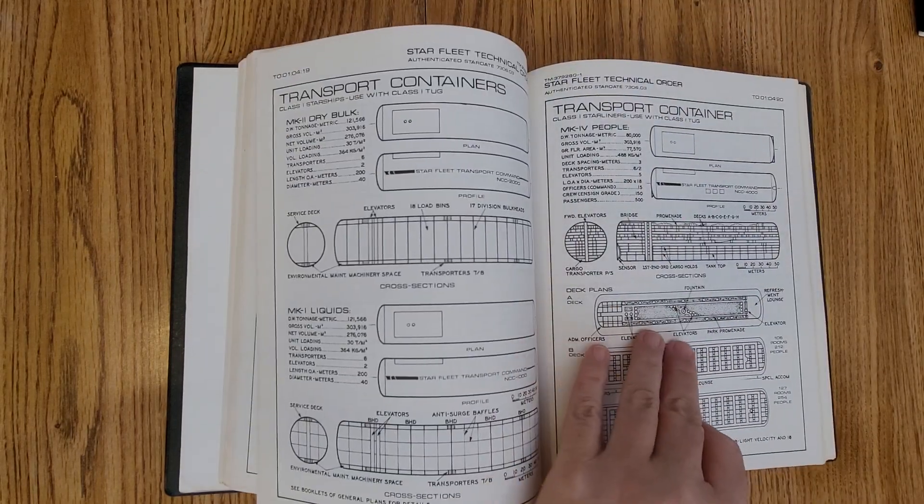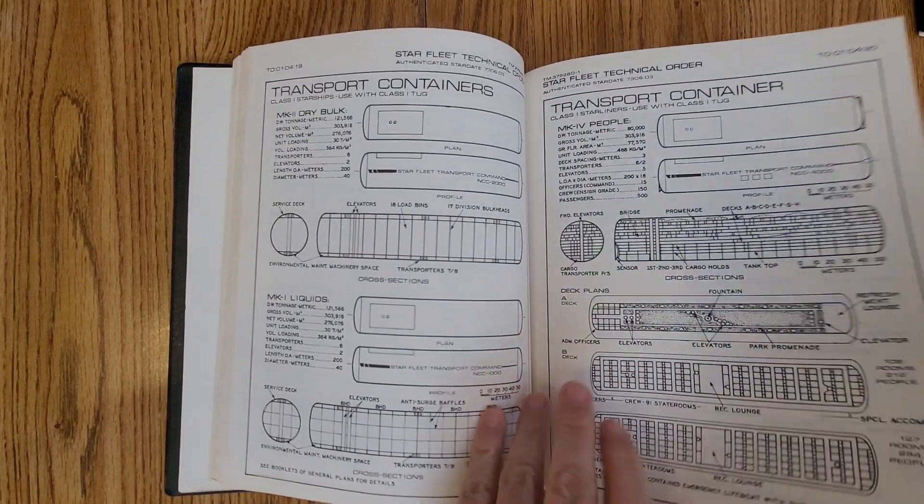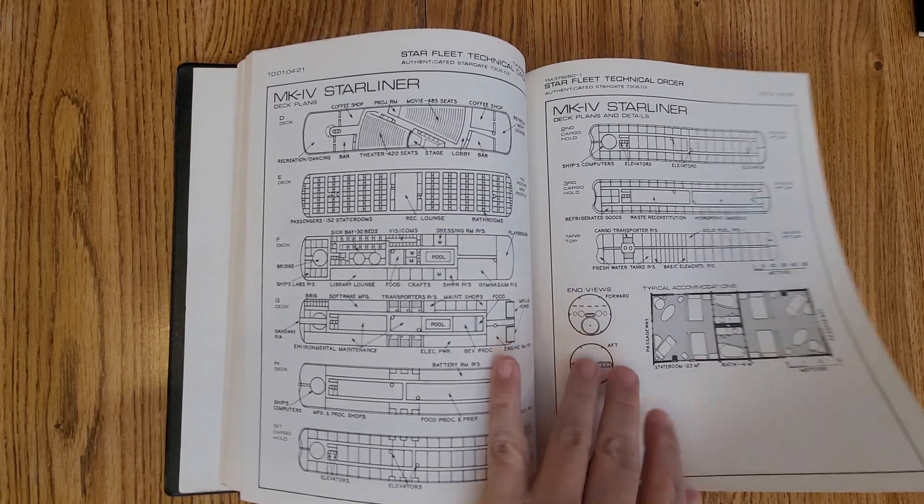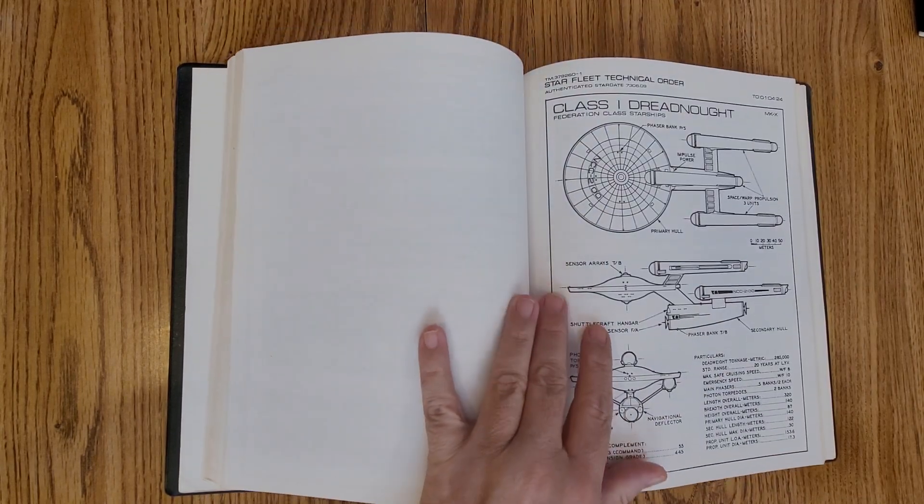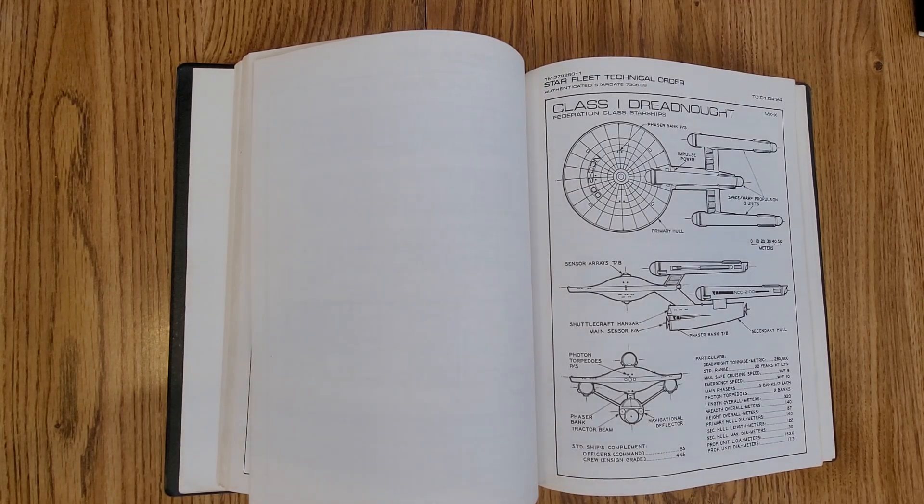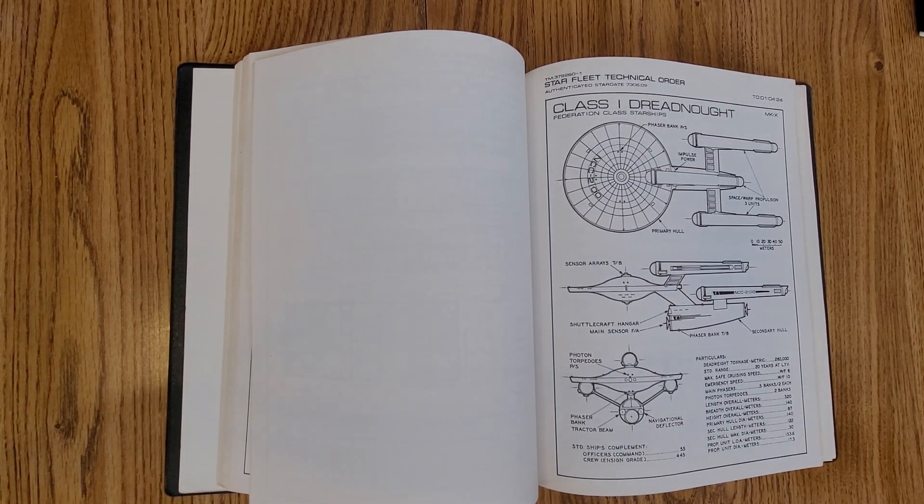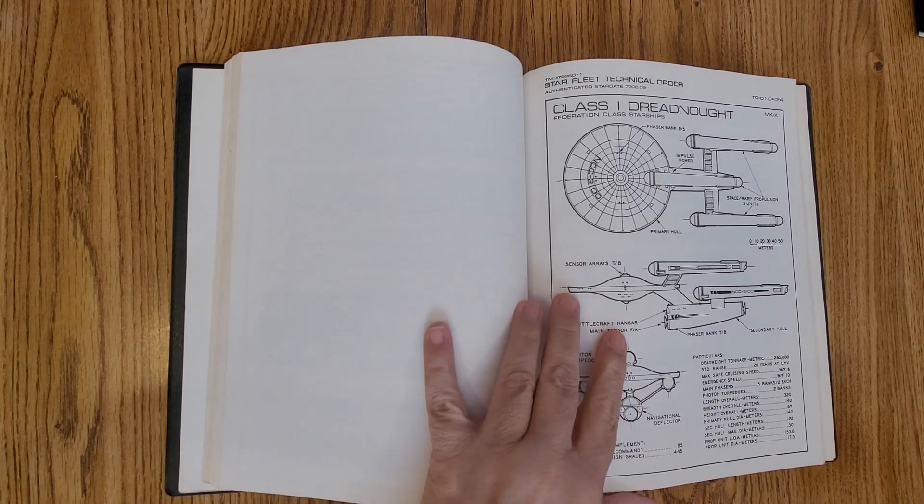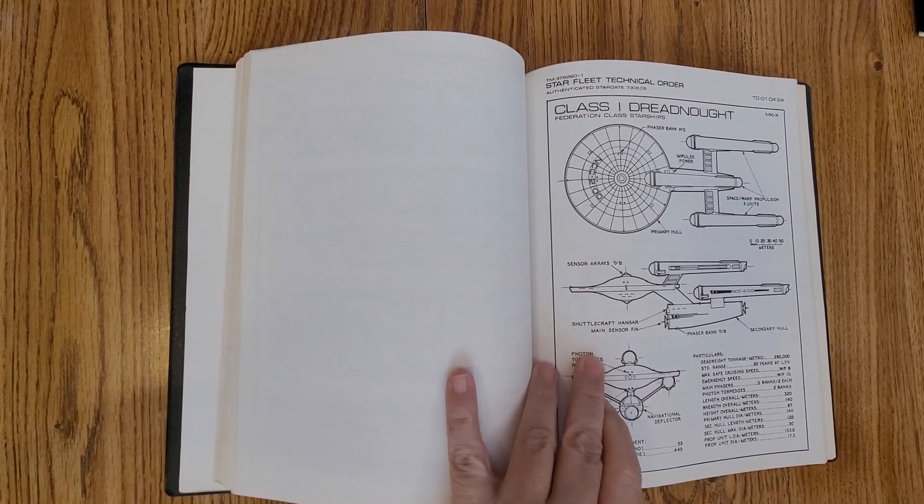Your tug units that were hauled, the different types of units by the tugs. And then my favorite ship, which I really wish they would have done something with. We did utilize it in Starfleet battles. But the Dreadnought class, which was really neat.